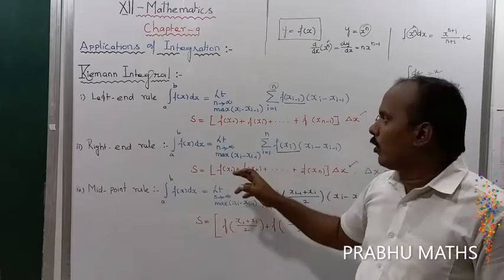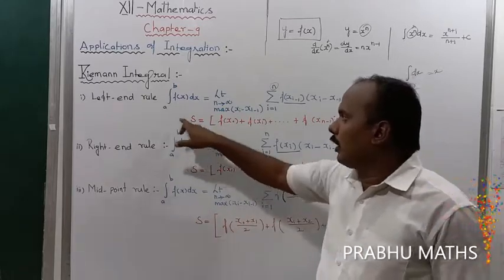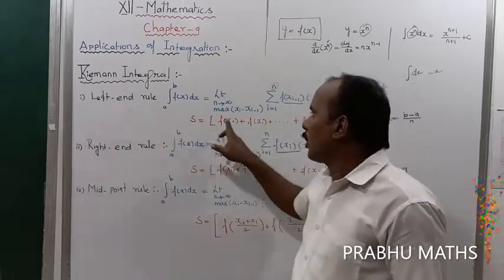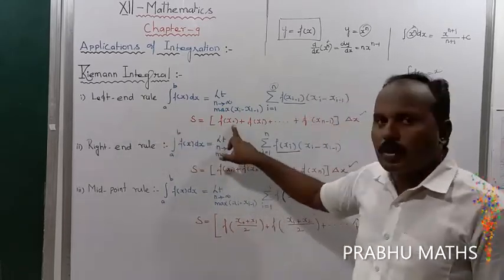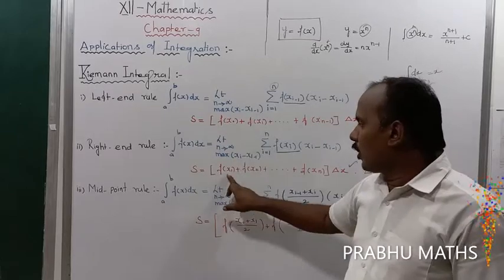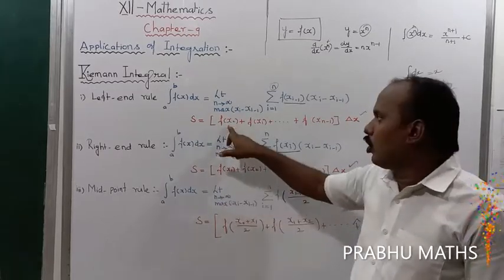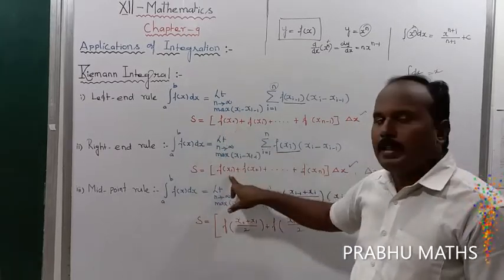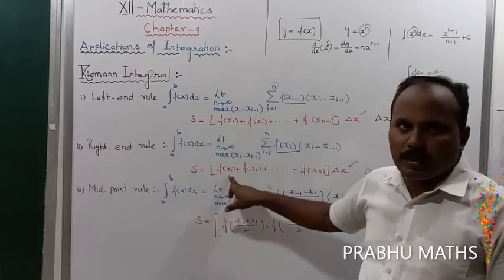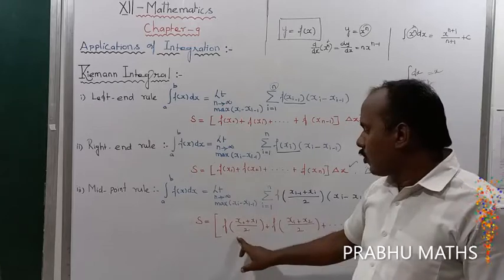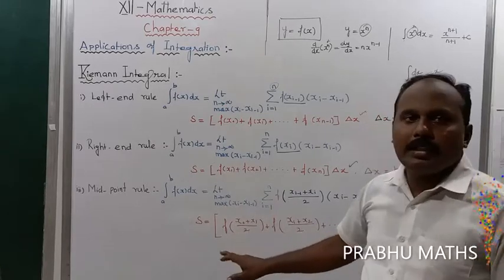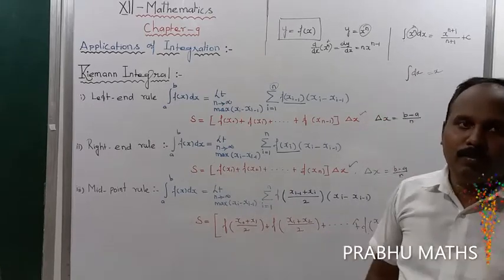If we want to use the left end rule, we start from x₀ and go to x₁. The term starts at 0 and goes to x₁. We also need to find out the midpoint.